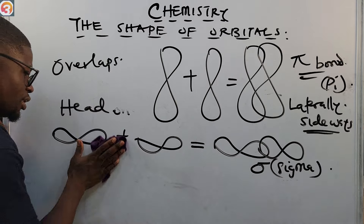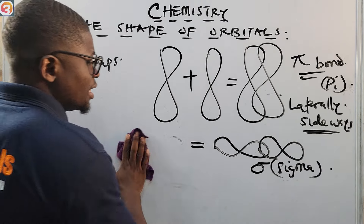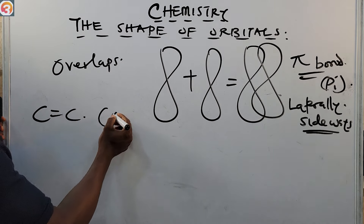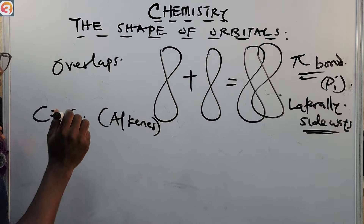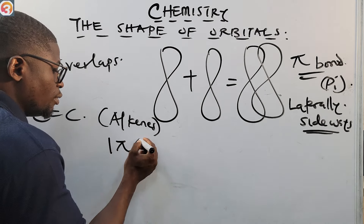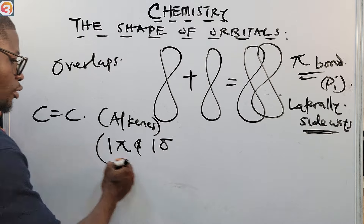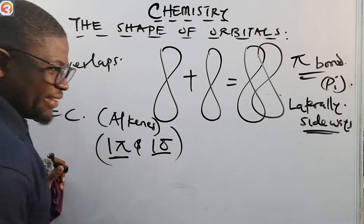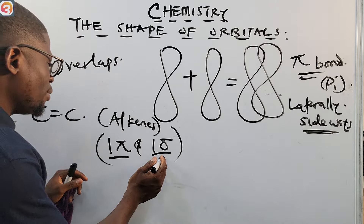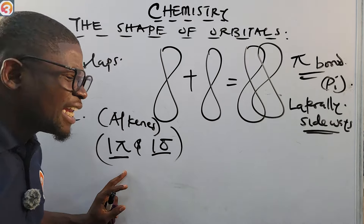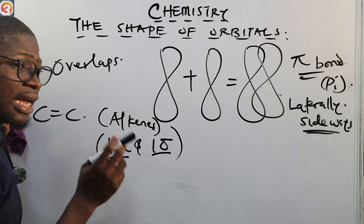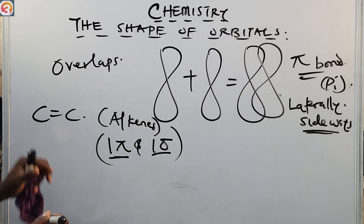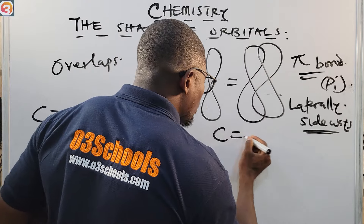In the last episode we mentioned pi bonds and sigma bonds. The carbon-to-carbon double bond found in alkenes has one pi bond and one sigma bond. During reactions, the pi bond is broken down, but the sigma bond is unaffected because the sigma bond is stronger than the pi bond.